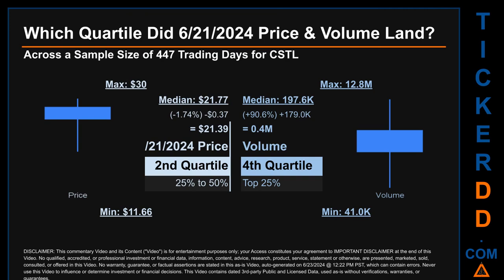Hello, my name is Maria. Which quartile did June 21st, 2024 price and volume land across a sample size of 447 trading days? The maximum end-of-day price for CSTL was $30.00 while the minimum was $11.66. Within that price range, June 21st, 2024's price of $21.39 landed within the second quartile, putting it within the 25 to 50 percent range of all sampled end-of-day prices. The day's volume landed within the fourth quartile, marking it within the top 25 percent of all sampled daily volume, which saw a max daily volume of 12.8 million and a minimum of 41,000. CSTL has a median price of $21.77; therefore, June 21st, 2024's price was lower from that middle marker by 1.74 percent. The day's volume of 0.4 million was more than the median by 90.6 percent.